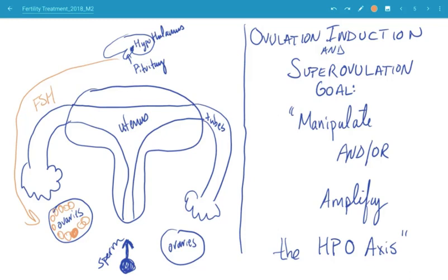Clomiphene works by—these drugs we're going to be talking about, clomiphene, letrozole, and gonadotropins, work to manipulate and amplify the HPO axis. In patients who do not ovulate, they need these drugs to help induce ovulation. For patients who already ovulate but may need a boost or may need to help superovulate them to increase their monthly fecundability, these drugs can also be helpful. So these drugs serve two purposes: they help induce ovulation and they help superovulate patients.